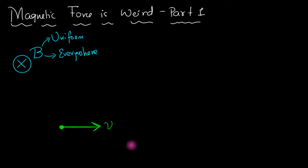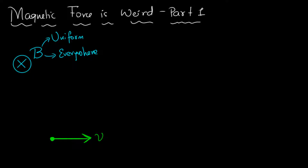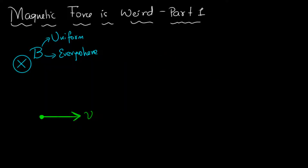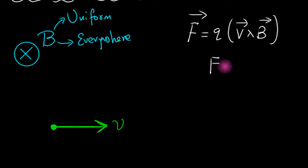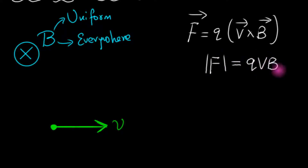So here is the positive charge, moving towards the right. We already know that moving charges in a magnetic field experience a force, and that force is given by the Lorentz force. Since the velocity is perpendicular to the magnetic field, the magnitude of that force is just QvB. And the direction of that force, as seen by us, is going to be upwards.